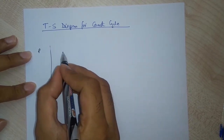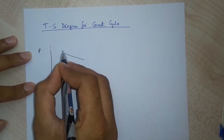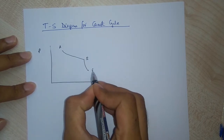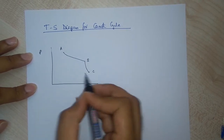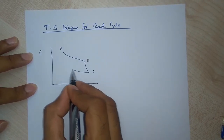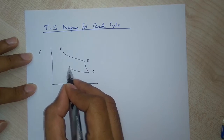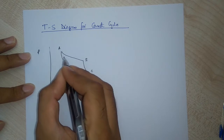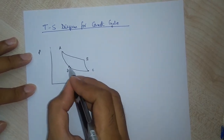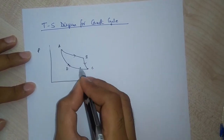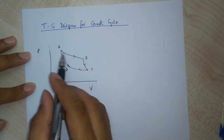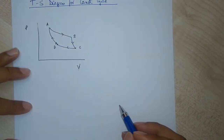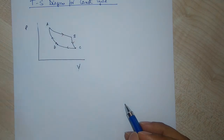The PV diagram looks something like this: we take the gas from A to B in an isothermal expansion, B to C in an adiabatic expansion, C to D in an isothermal compression, and from D to A in an adiabatic compression, completing the cyclic path A B C D A.